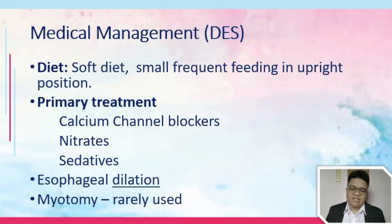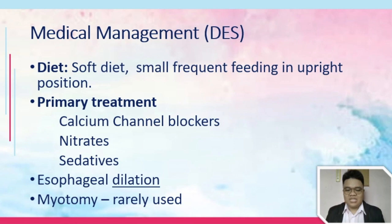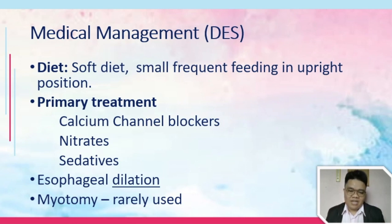For medical management of DES: a soft diet is recommended with small frequent feeding in an upright position to prevent reflux. For primary treatment — since we are talking about spasms — calcium channel blockers are the drug of choice. Nitrates, sedatives, sildenafil, anticholinergic agents, TCAs, and proton pump inhibitors are also used. Consider why each of these medications is given to a patient with DES. Esophageal dilation can also be done, but myotomy is rarely used for DES management.